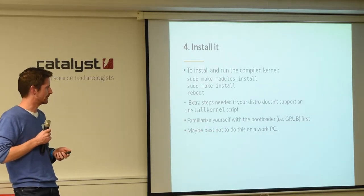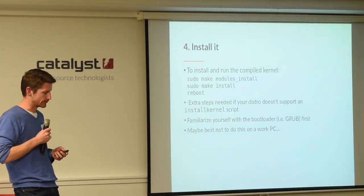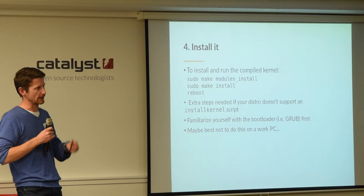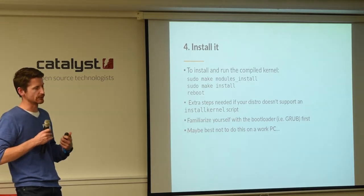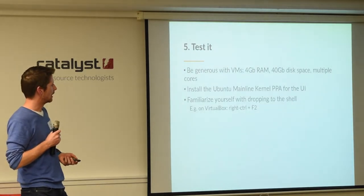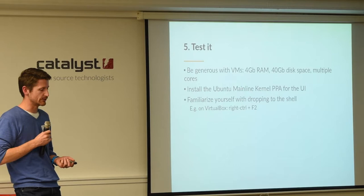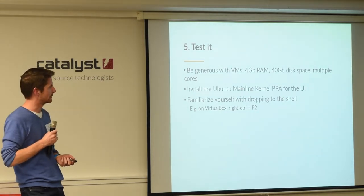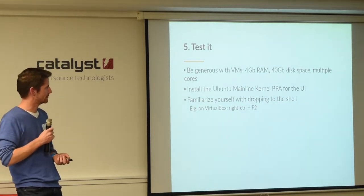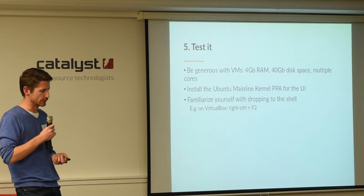Be nice to your IT staff and don't do this on a work machine — that's what VMs are for. If you're using a VM, the process is the same: clone the code inside the VM, run make, and make install replaces the image the VM will use on next reboot. Be generous with resources — it needs a lot of RAM and disk space. If you run out, the kernel just doesn't boot and doesn't give you a nice error message. Giving the VM multiple cores will also speed things up.